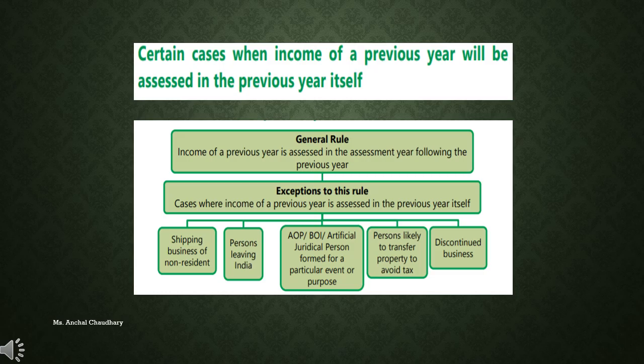Next is persons leaving India. Whenever a person is leaving India and does not have a certain plan to come back in the next year or the year after, you have to immediately impose the tax on that person's income in the current year only. Next is AOP or BOI when formed for a particular event or purpose. When these associations are formed for a particular event, at the time of dissolution of that AOP or BOI, you have to impose the tax thereon.